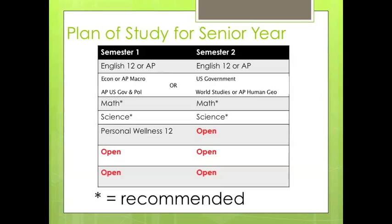All of you will be registering for seven credits for next year. Each class will have different requirements based on what year in high school you are. If you will be a senior, you will need to register for at least one credit of English 12 — for some that will be an AP class, for others it will be English 12. You will also need to register for one credit of Social Studies. Seniors must also register for Personal Wellness 12. Most juniors will have met their math and science requirements heading into their senior year, but it is highly recommended that all students take a math and science class in each of their four years. Speak with your current teachers for advice on your next year's math and science classes.